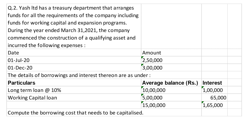If you see in the problem sum, the year ended March 31st, 2021, and the date given is 1st July. So from 1st July till March 31st, 2021, if you count the months: July, August, September, October, November, December, January, February, March — total 9 months. And from December: January, February, March — so 4 months.